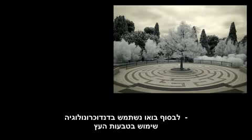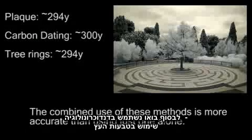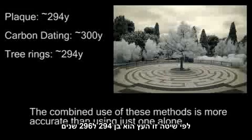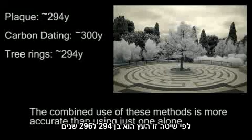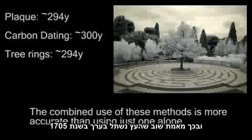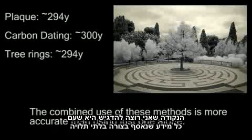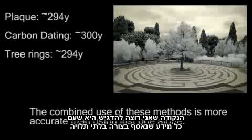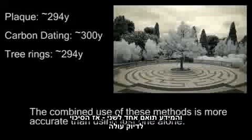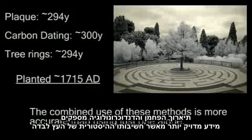Finally, let's take a look at dendrochronology, or using tree rings to date it. This independent method arrives at the tree being 294 to 295 years old, thus validating yet again that the tree was planted in roughly 1705. The point I'm trying to illustrate here is that with each independent method of data collection with a matching result, the higher the probability of accuracy becomes.